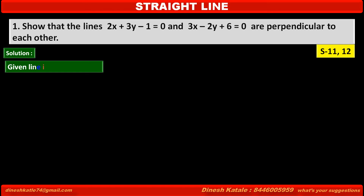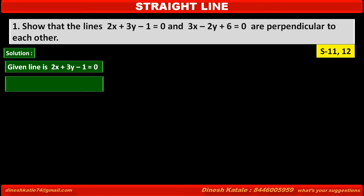The first given line is 2x plus 3y minus 1 is equal to 0. To find the slope of this line, we have to convert this equation in the form of y is equal to mx plus c. Transposing 2x minus 1 to the right hand side, we get 3y is equal to minus 2x plus 1.